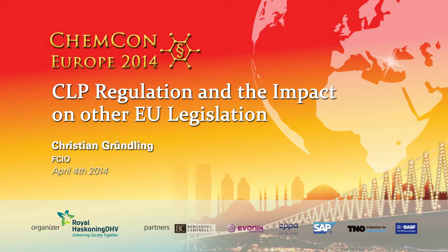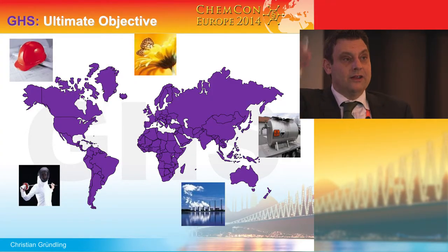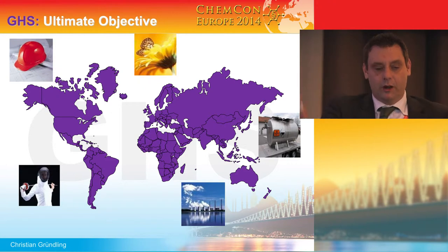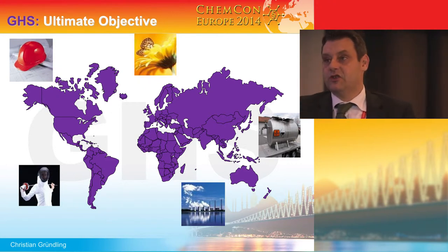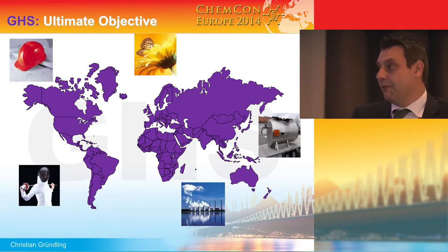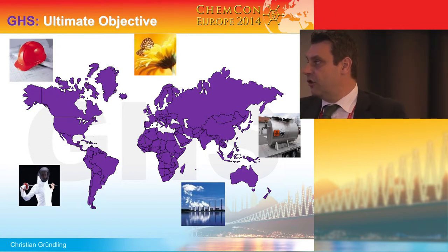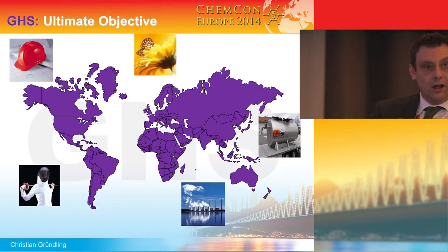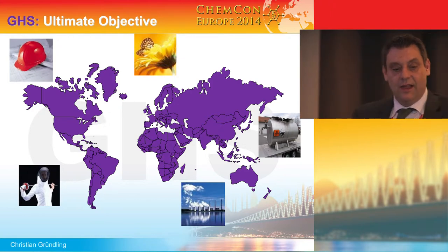The ultimate objective of the GHS is to get the global classification on a uniform level all over the places. The reason we are doing that is to ensure proper risk management measures for worker protection, for the consumer, and for the environment, as well as for transport of dangerous goods and for safety of installation.